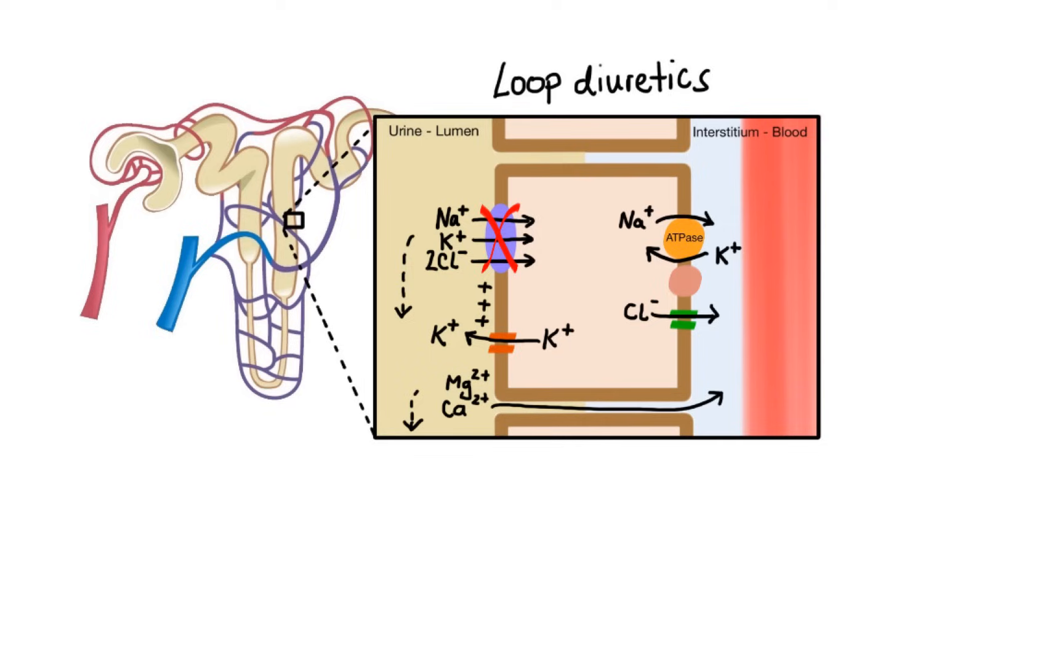So when loop diuretic comes around and blocks sodium-potassium-2-chloride cotransporter, we not only lose sodium and water, but also potassium, calcium and magnesium. Keep in mind that potassium loss takes place mainly in the late distal tubule, where sodium-rich fluid enhances sodium-potassium exchange, and I'll talk about this more later.